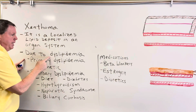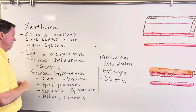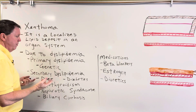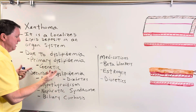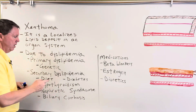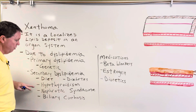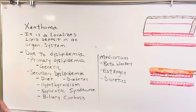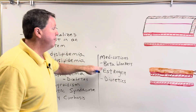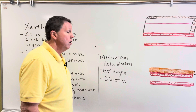They're usually due to something called dyslipidemias. You can have two different causes of dyslipidemia. The first one could be genetic, which you're going to be born with — familial hypercholesterolemia is an example of that. Then you can get secondary, which we call acquired dyslipidemia. That could be due to your diet, diabetes, hypothyroidism, nephrotic syndrome, biliary cirrhosis, or from medications such as beta blockers, estrogen, or diuretics.